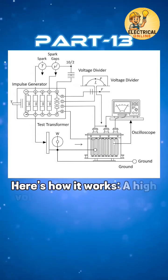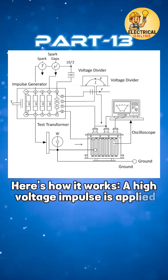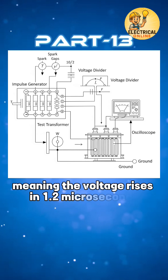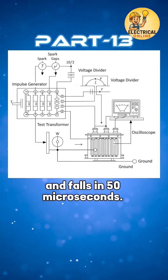Here's how it works. A high voltage impulse is applied, often 1.2/50 microseconds, meaning the voltage rises in 1.2 microseconds and falls in 50 microseconds.